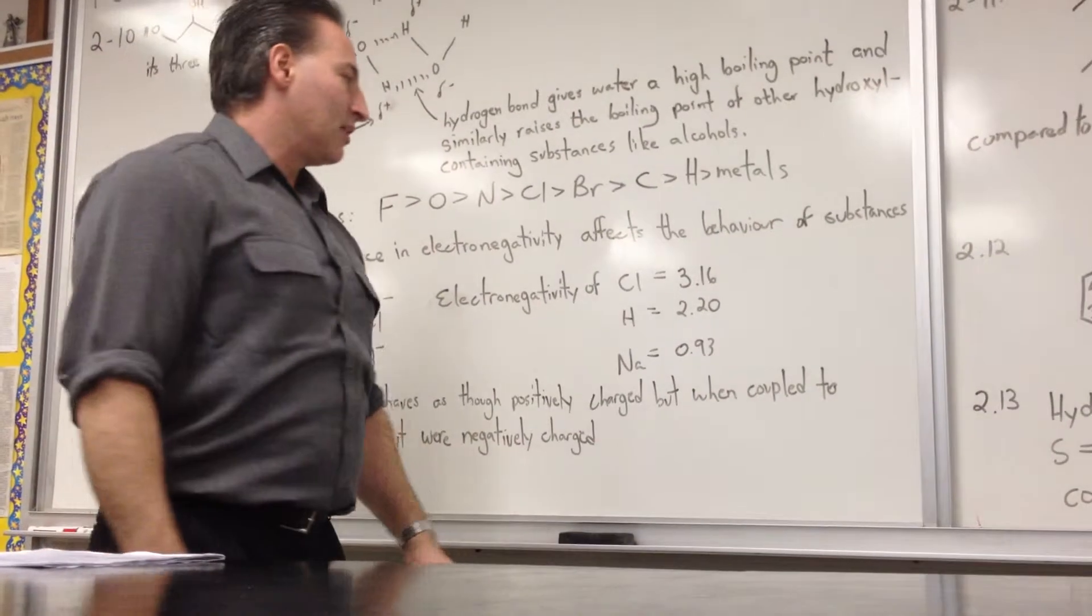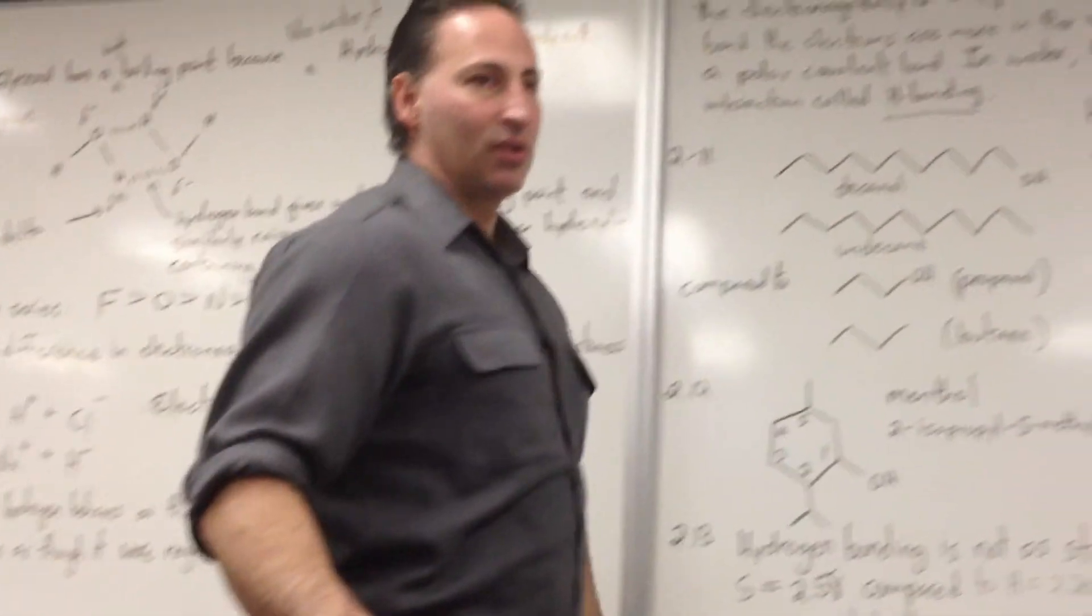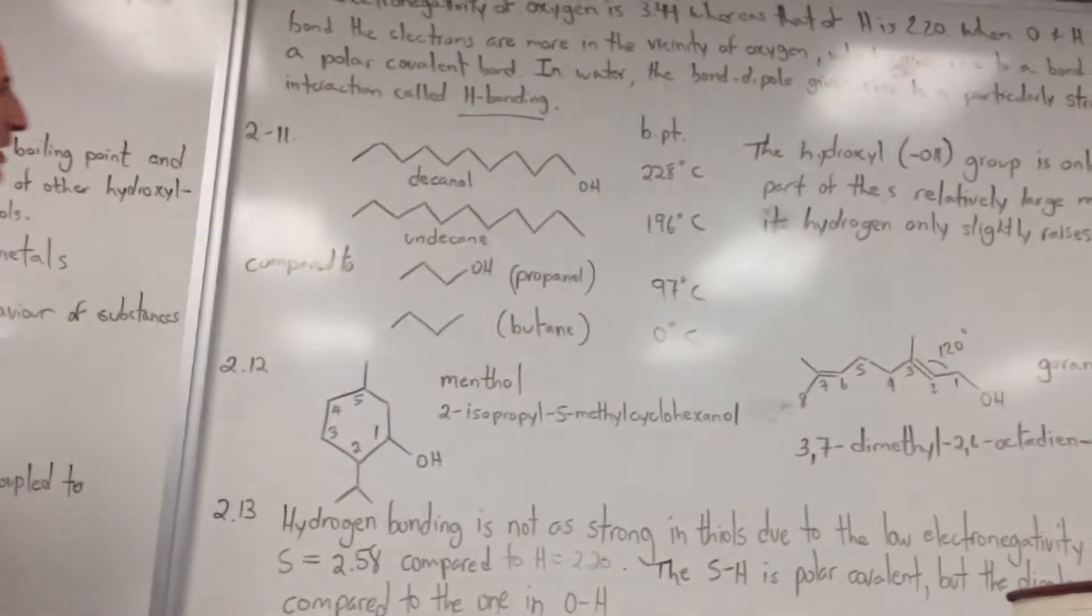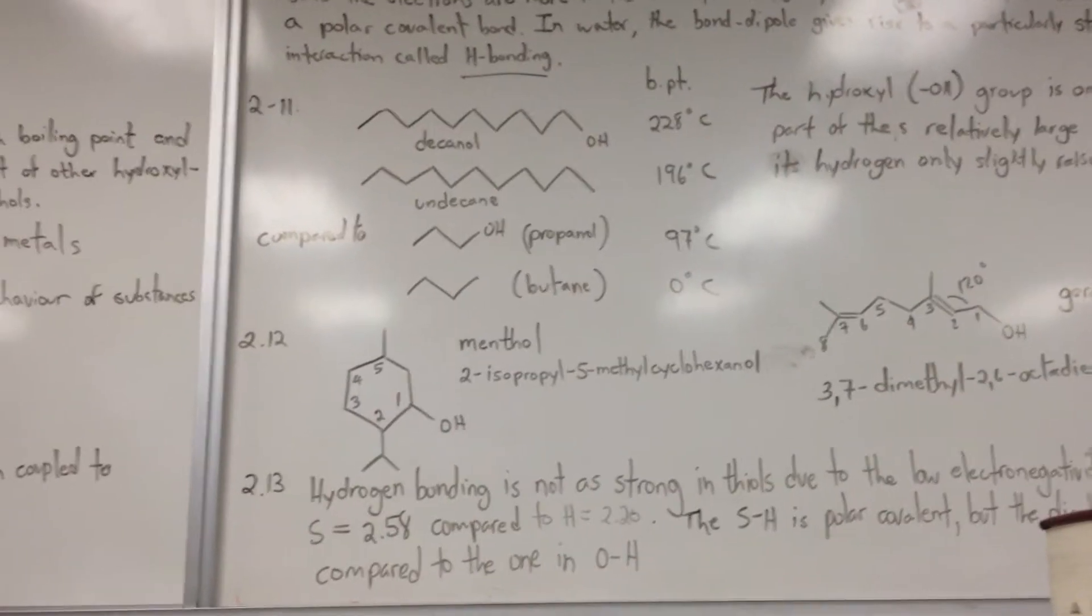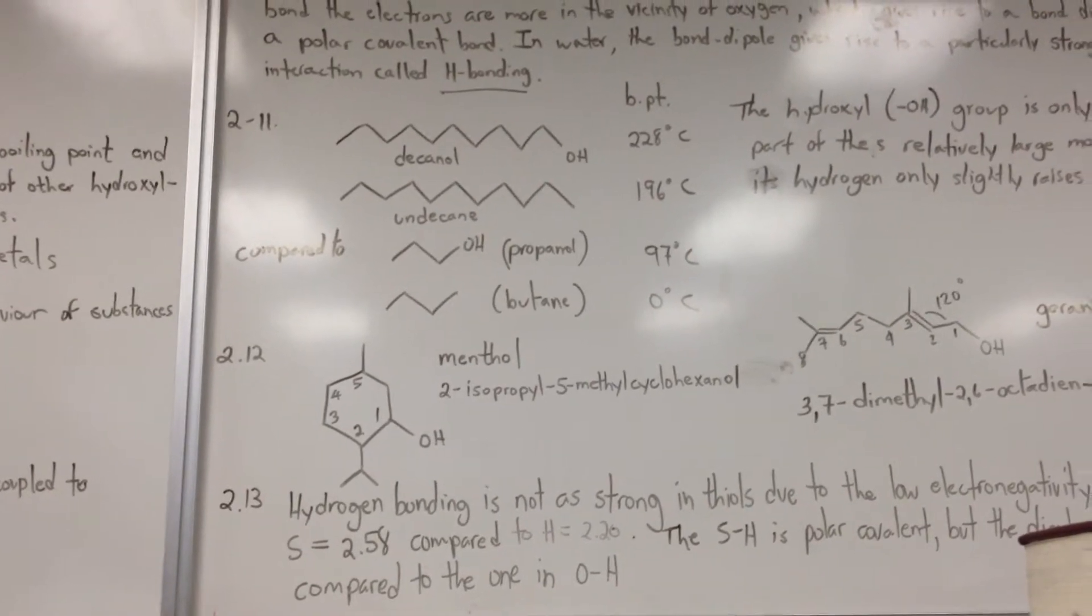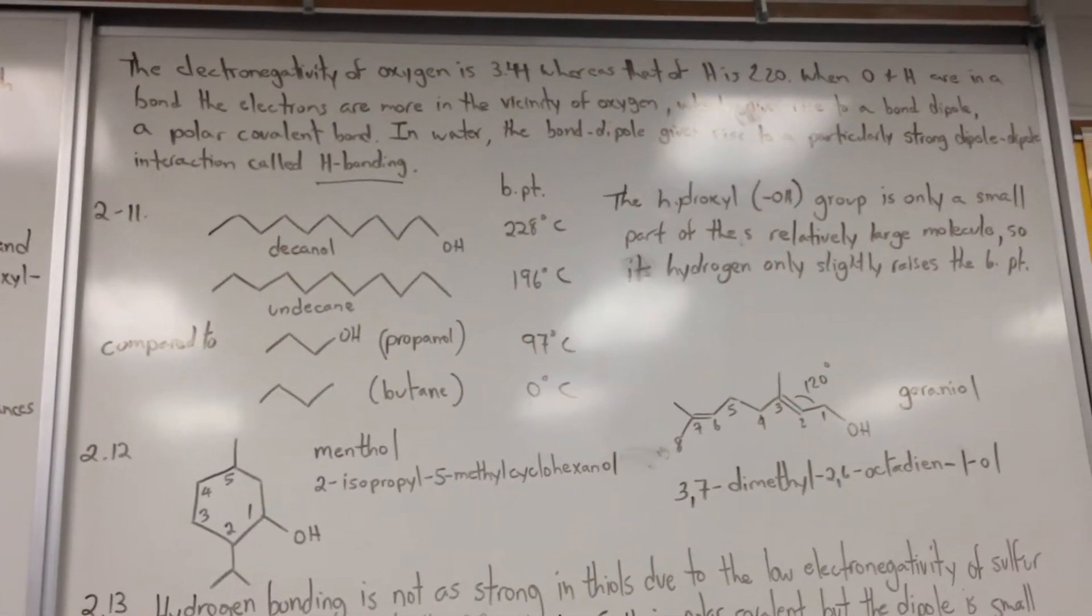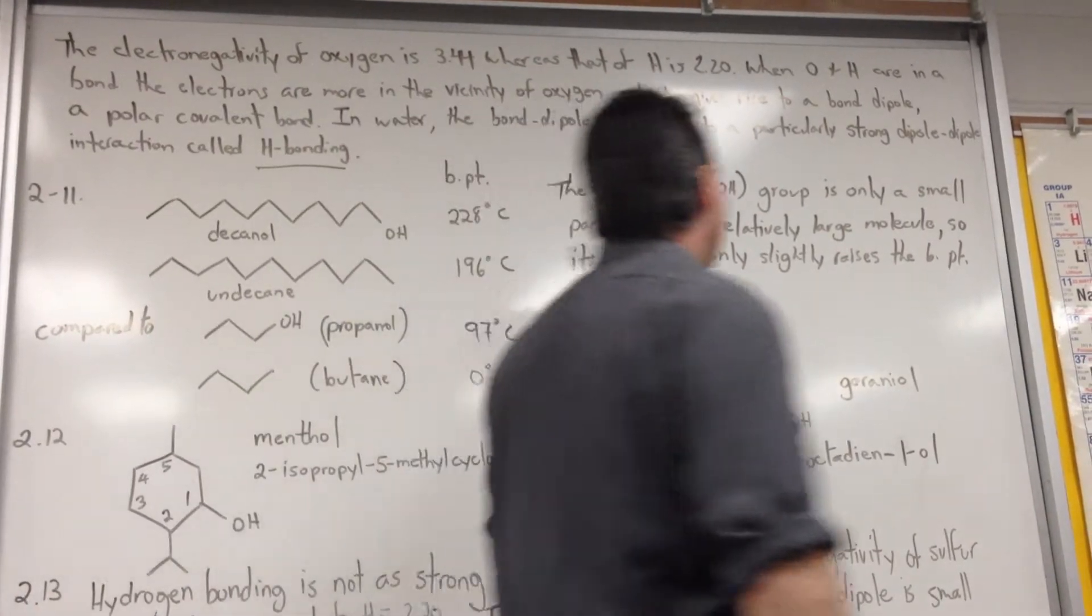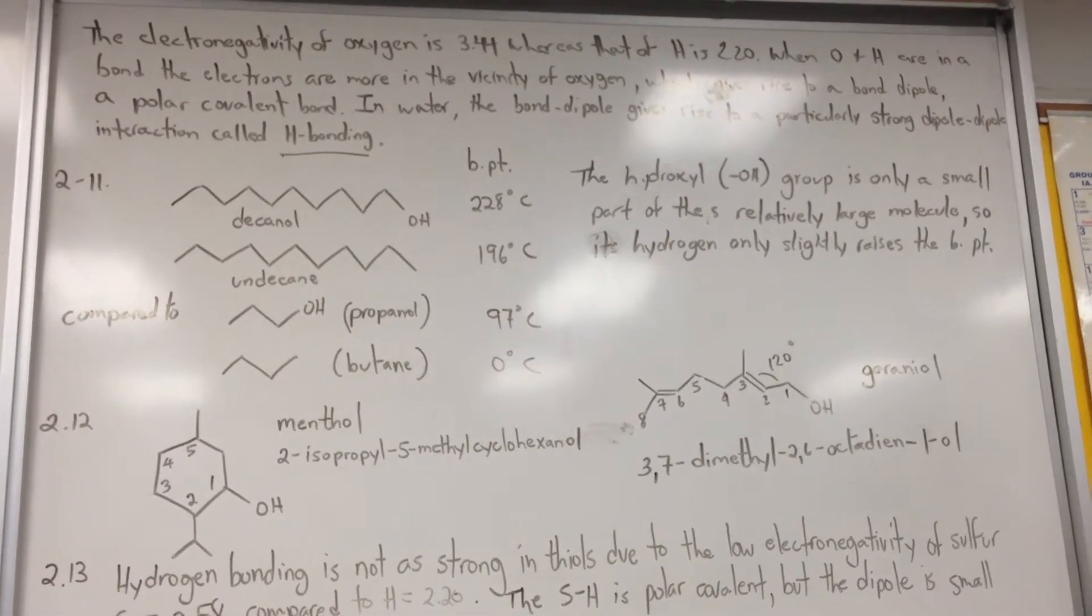And it has far-reaching implications in organic chemistry and biochemistry. I was joking in the earlier class that the answer to almost every question in biochemistry is hydrogen bonding. The electronegativity of oxygen is 3.44, whereas that of hydrogen is 2.2. When oxygen and hydrogen are in a bond, the electrons are more in the vicinity of oxygen, which gives rise to a bond dipole, a polar molecule. In water, the bond dipole gives rise to a particularly strong dipole-dipole interaction called hydrogen bonding.